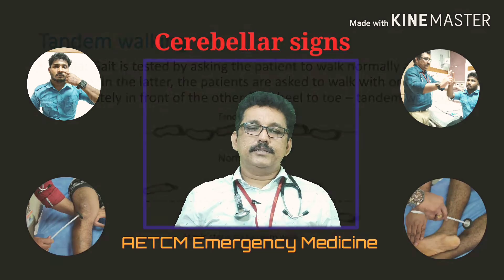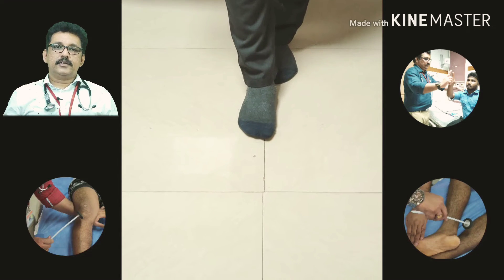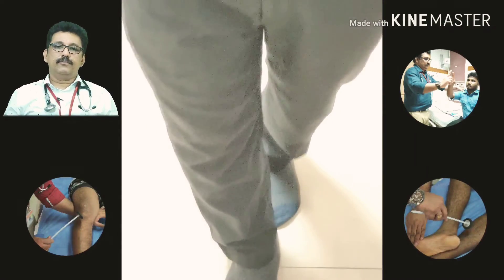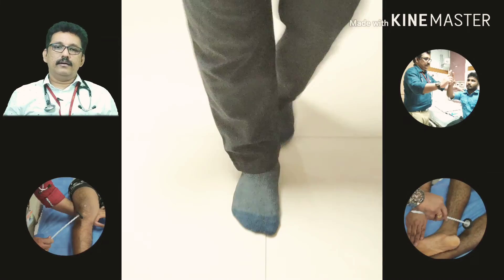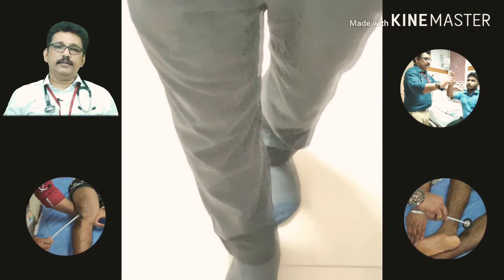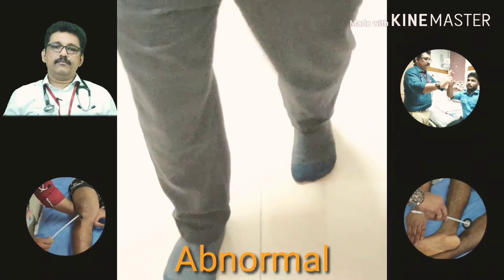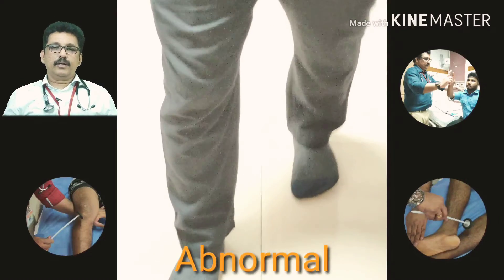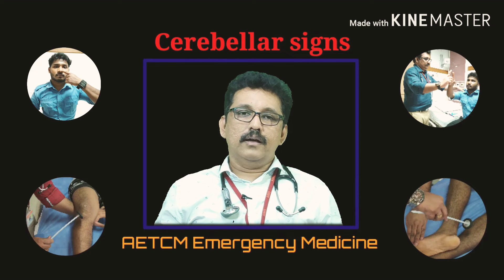The second test is tandem walking — ask the patient to walk on a straight line, placing one foot directly in front of the other. A normal person can do this without falling. A patient with cerebellar disorder will not be able to perform this test or may fall to one side. With a right-sided cerebellar lesion, the patient may fall to the right and cannot keep the right foot on the line.